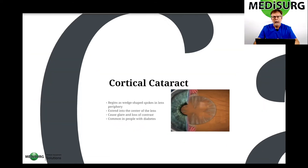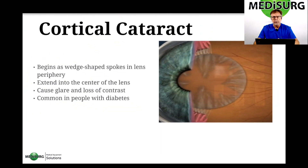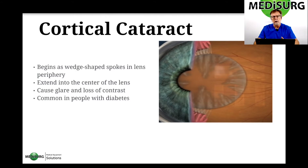The cortical cataract — the chocolate of the peanut M&M — starts to turn opaque. It begins as wedge-shaped spokes on the periphery of the lens and extends into the center of the lens. It causes glare and loss of contrast, and it's common in people with diabetes.